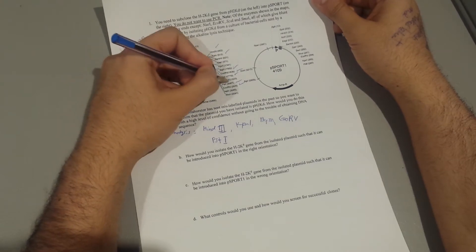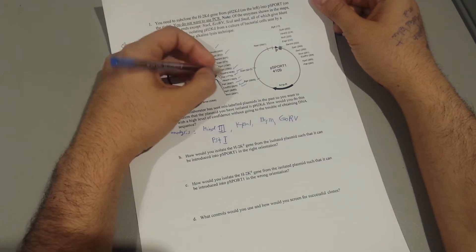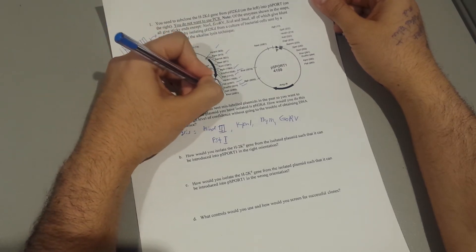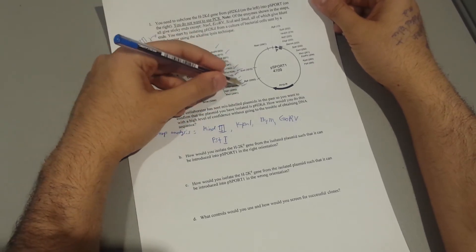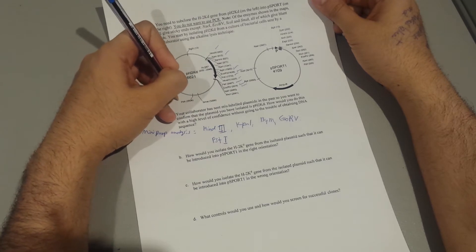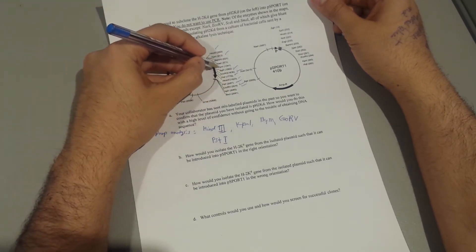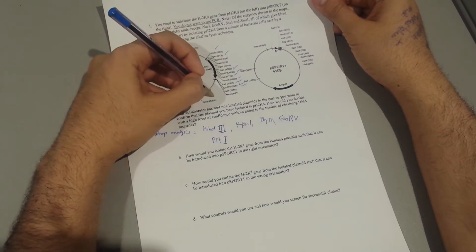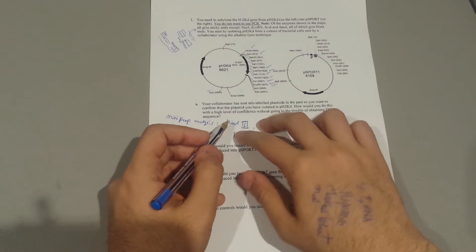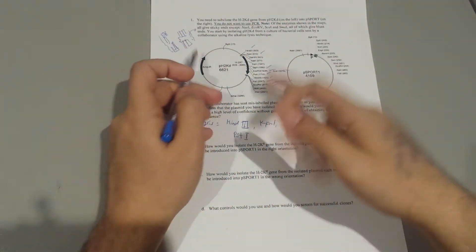HindIII, we've already done that. EcoRV, we've already done that. NotI, PstI, there is no second site, so no. SmaI, there is no second site. So you get the rationale here, we only look for two fragment sites to give us unique two fragments that can be matched.